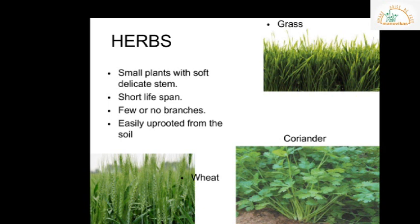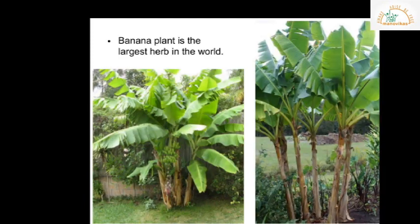Herbs can be grown in small pots or in the ground. Some examples of herbs are grass, wheat, and coriander — plants with soft, delicate stems. Interestingly, the banana plant is the largest herb in the world. Though it is not very small in height, due to its soft, non-woody stem it is considered a herb.